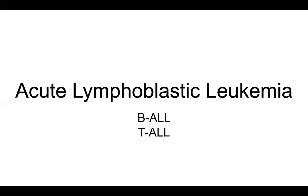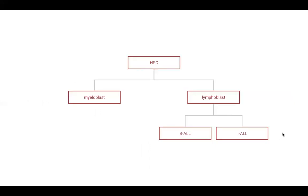Hello, welcome to Med School Pneumonics. Today we'll be talking about acute lymphoblastic leukemia. There are two subtypes, the B-cell and the T-cell, referred to as B-ALL and T-ALL. Looking at the big picture, you have hematopoietic stem cells, which can give rise to myeloblasts or lymphoblasts. Today we'll be talking about the lymphoblastic leukemias with the two subtypes of B-cell and T-cell.